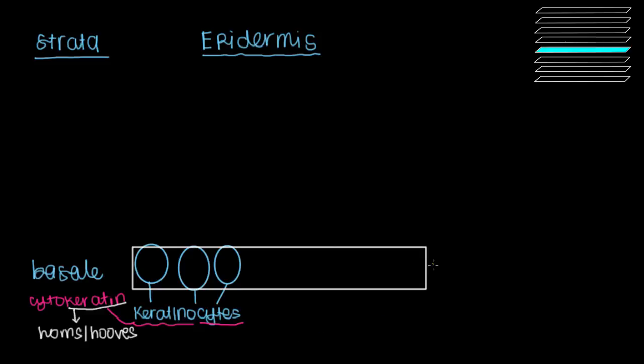Another very important thing to know about the stratum basale is this is where we have very rapid cell division. Rapid cell division, because this is the bottom layer of our epidermis. So cells are made here, and slowly they move upwards.